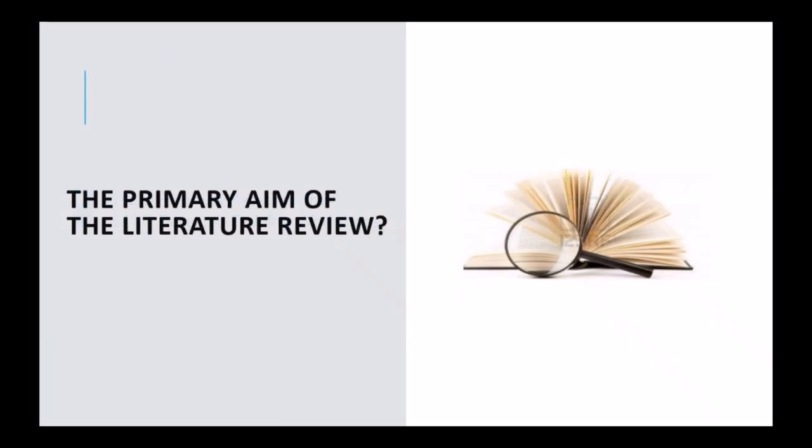Let's get started with a key question: what is the primary aim of the literature review? In a nutshell, a literature review is a comprehensive summary of previous research on a topic. It surveys scholarly articles, books, and grey literature like theses and reports, and other sources relevant to a particular area of research. The review should enumerate, describe, summarize, and critically and objectively evaluate the body of previous research that is out there.